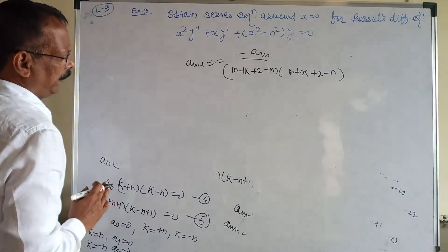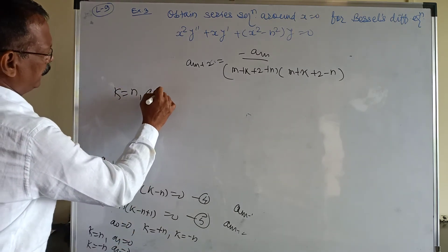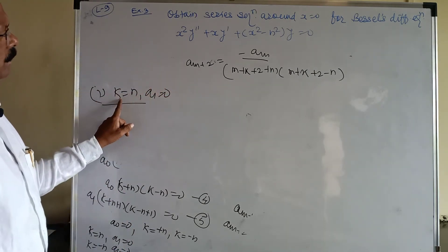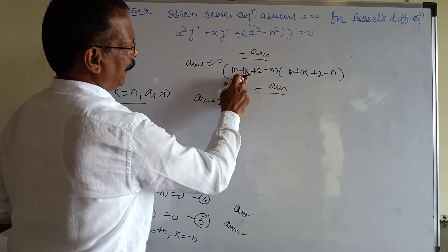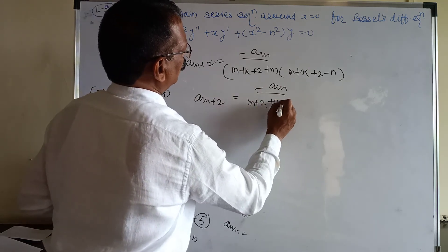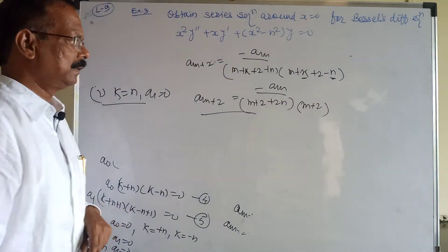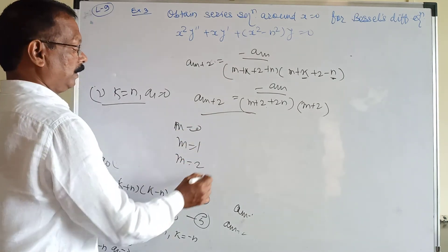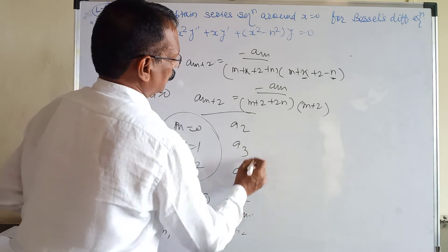Our conditions are: k = n with a₁ = 0, and k = −n with a₁ = 0. Substituting k = n into the recurrence relation: aₘ₊₂ = −aₘ / [(m+2n+2)(m+2)]. By substituting m = 0, 1, 2, 3, 4,... we can find a₂, a₃, a₄, a₅, and so on.